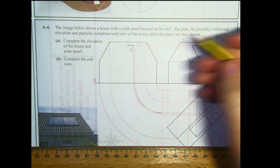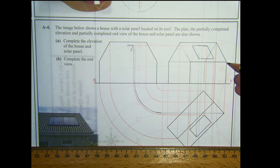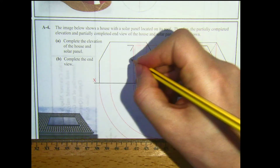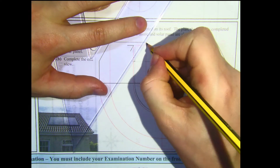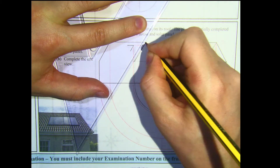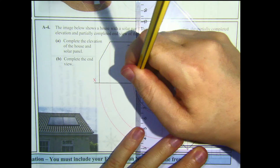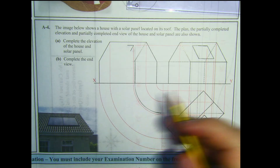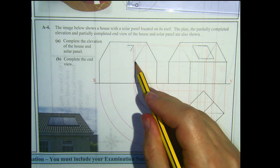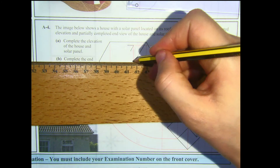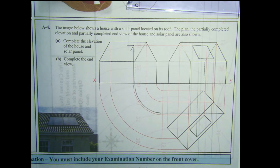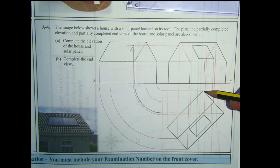Rotating this edge around, then projecting up — the height of this corner stays the same as in the elevation, so I can project that height across, giving me this point. That gives us a vertical line here, and it also gives us this front edge going across, so I can darken that line in as well. We've now drawn in the gable — the end of the house — and just this front face.